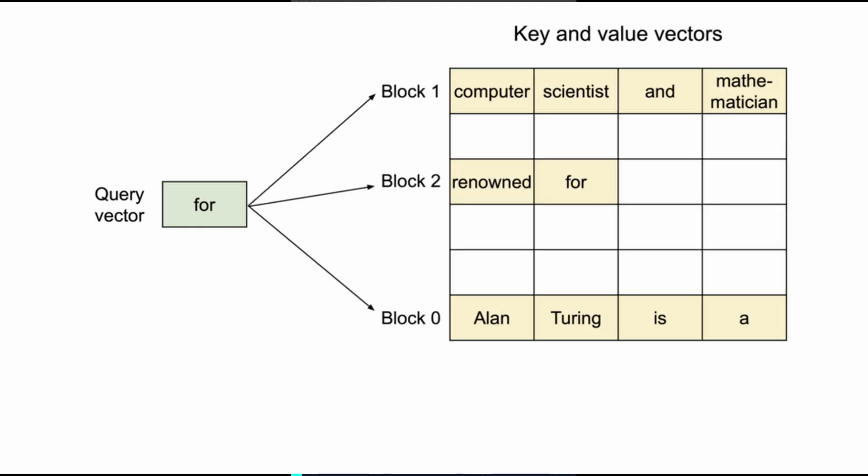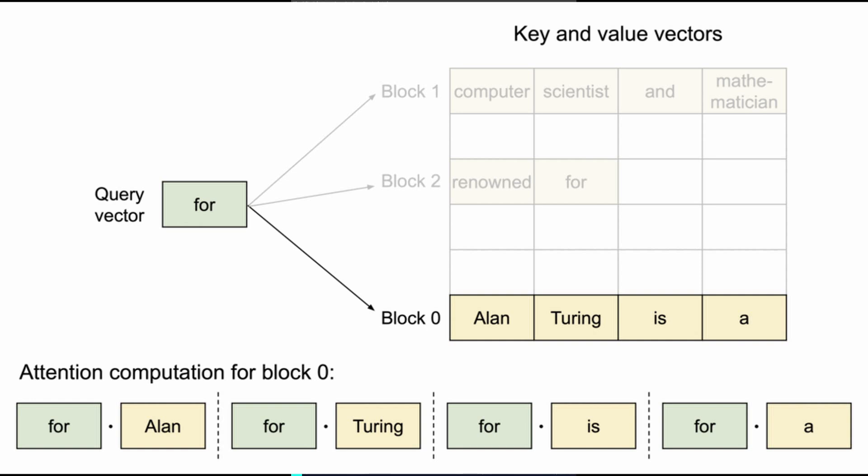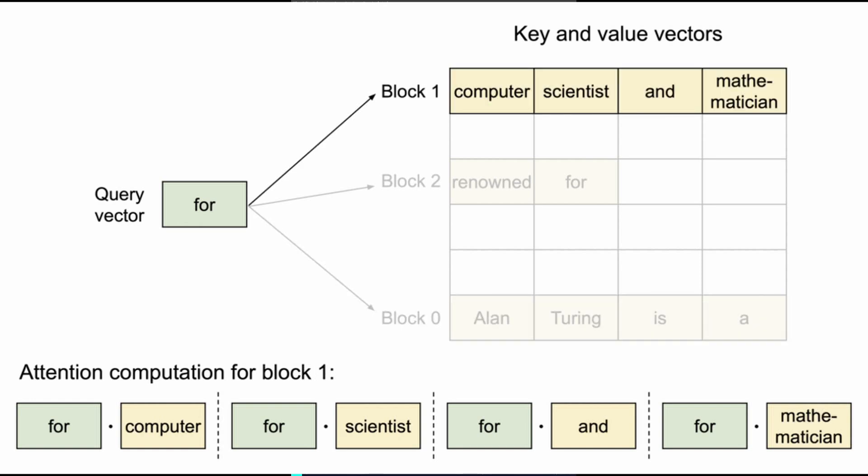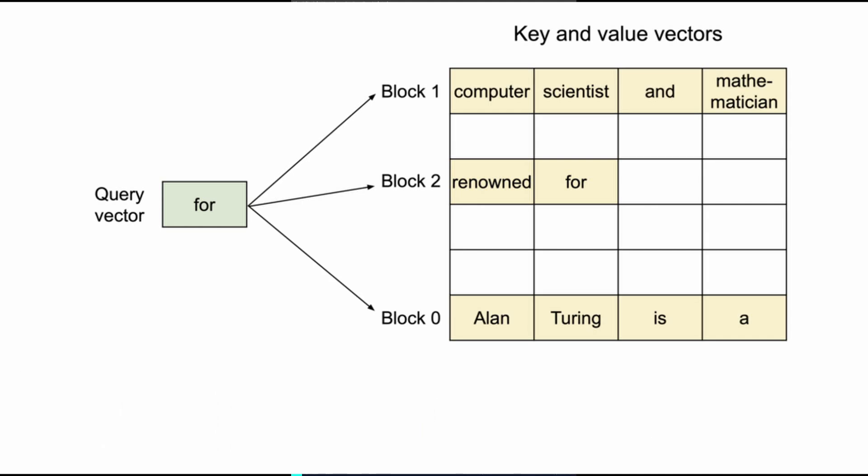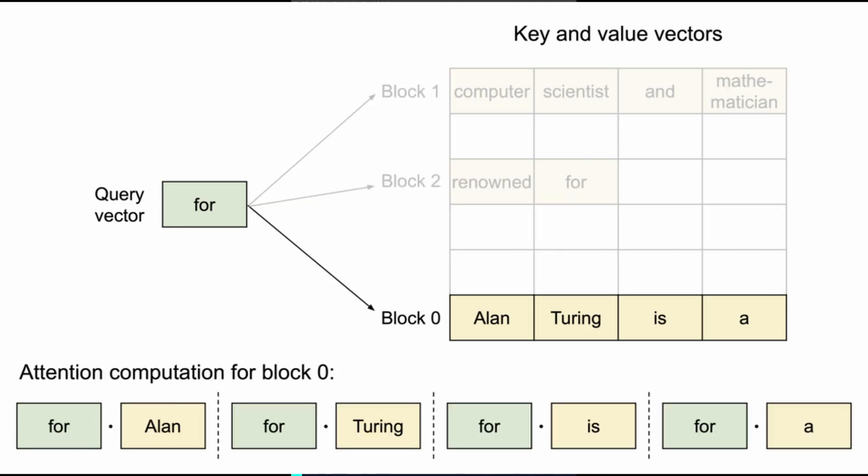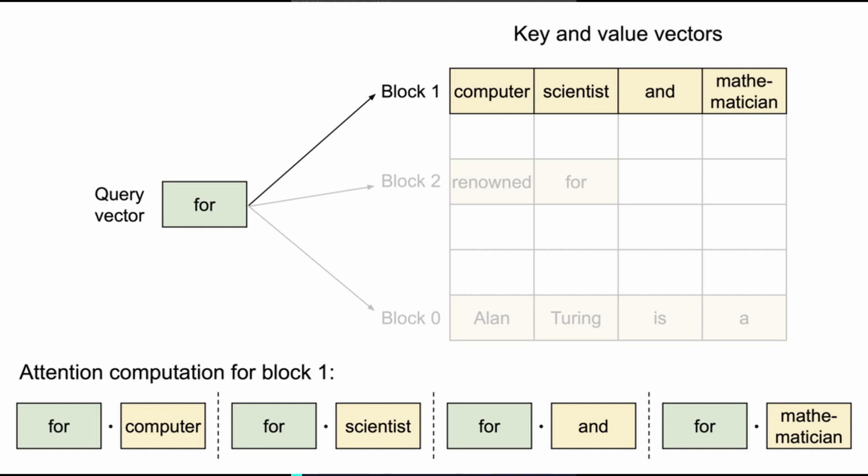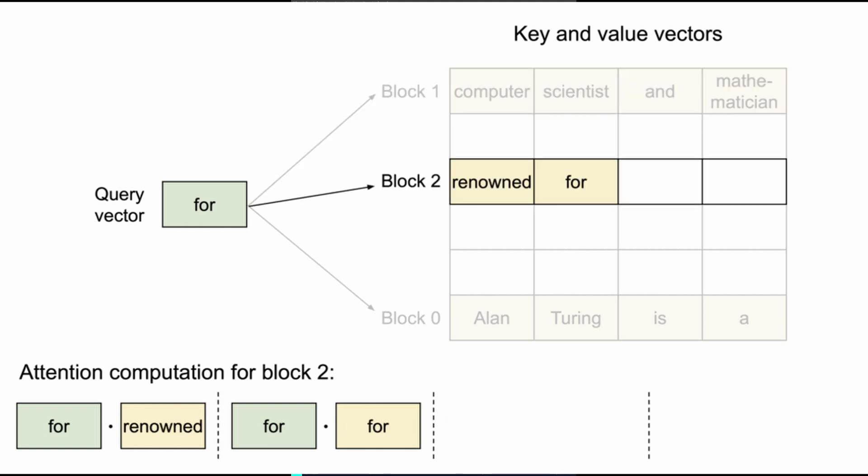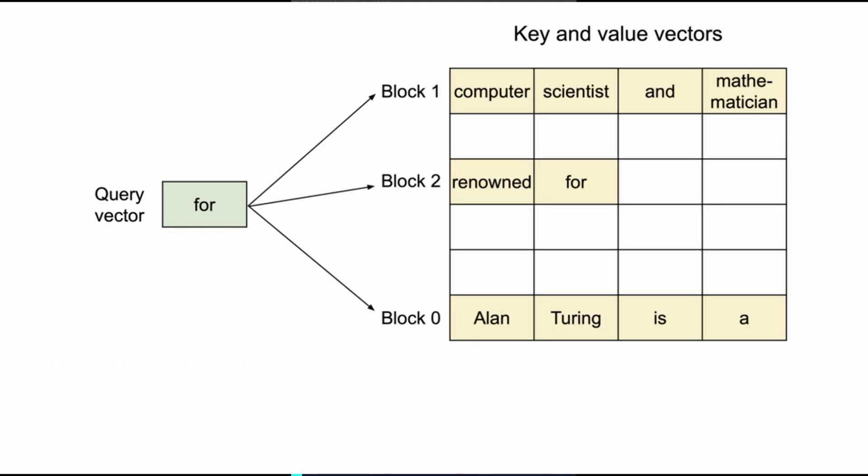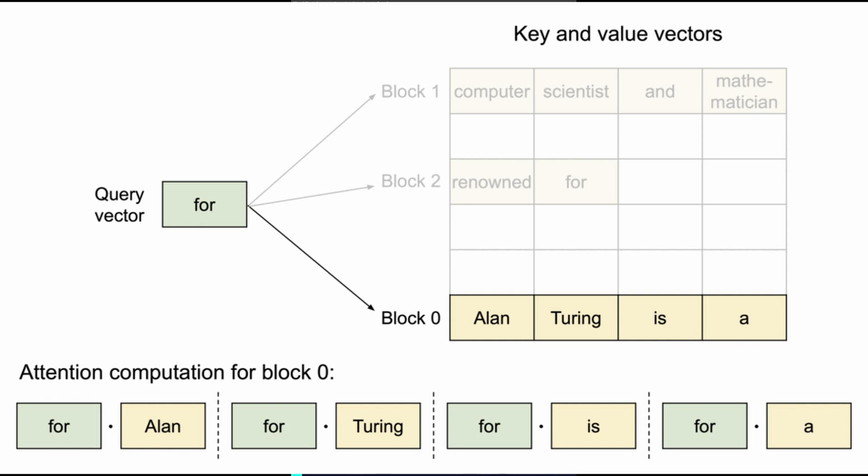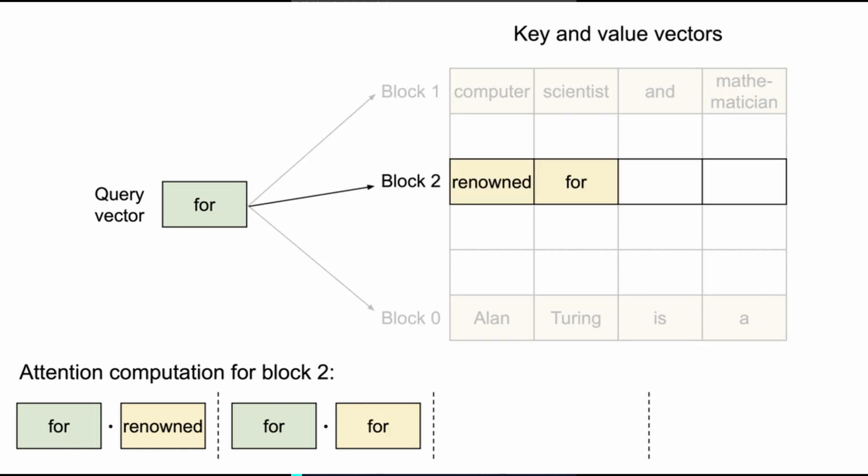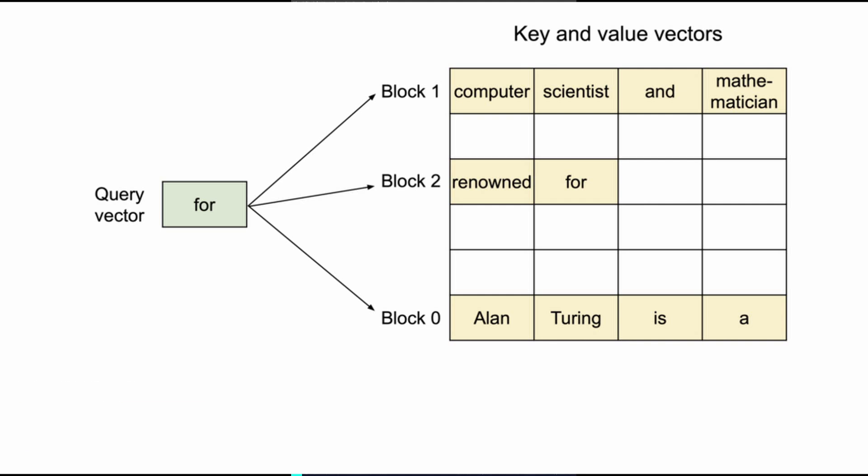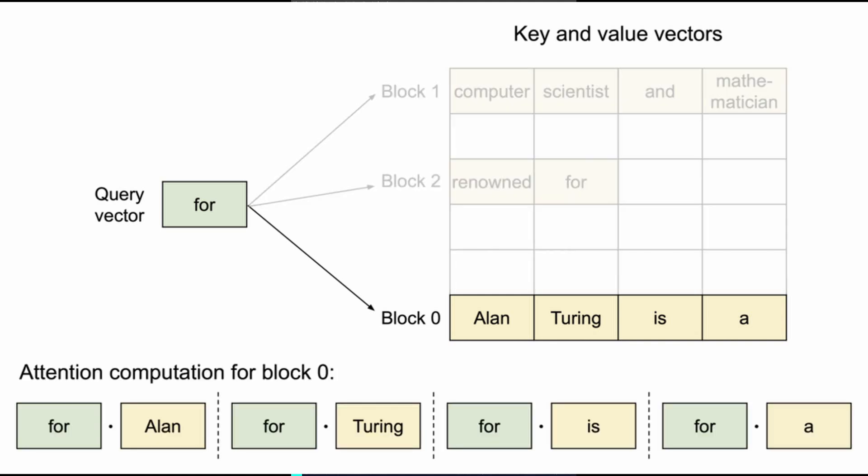During the attention computation, the paged attention kernel walks the language model's request list of block indices and fetches those blocks from the global block table to compute attention as normal in the correct order. The important point here is that because the blocks have been decoupled from individual requests, they can be shared just like the shared memory example in the operating system paging.